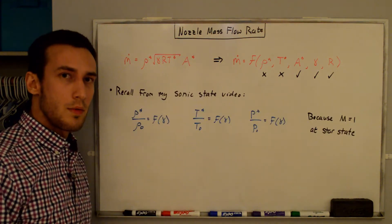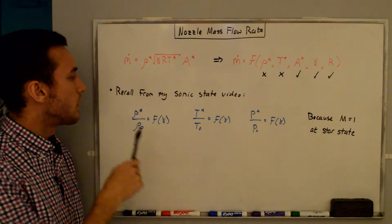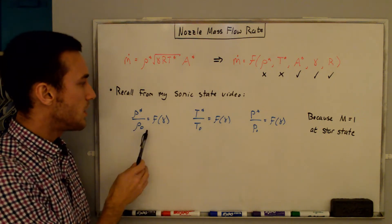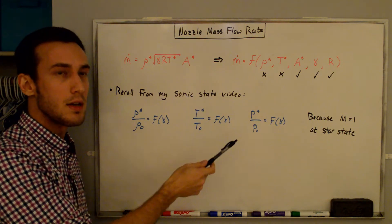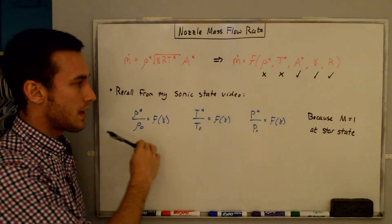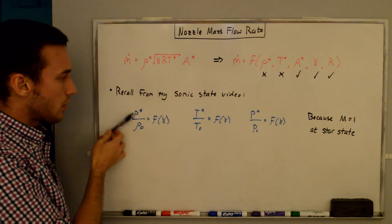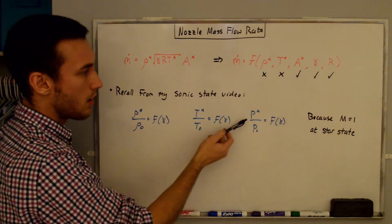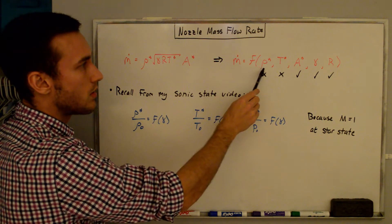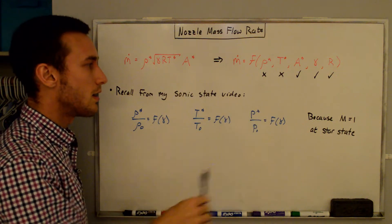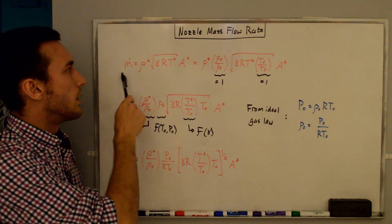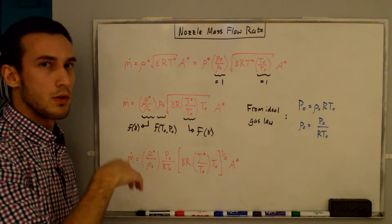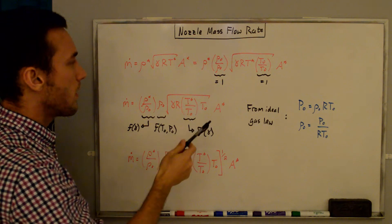Recall from the sonic state video: we can write expressions for ρ*/ρ₀, T*/T₀, and P*/P₀, and these are all functions of only γ, because at the star state the Mach number equals 1, which cancels out of the functional form. So ρ* is a function of ρ₀ and γ, T* is a function of T₀ and γ, and P* is a function of P₀ and γ. We're trying to get rid of ρ* and T* and replace them with P₀ and T₀.